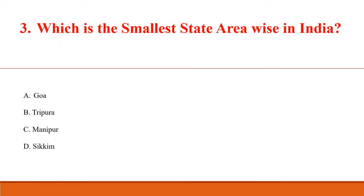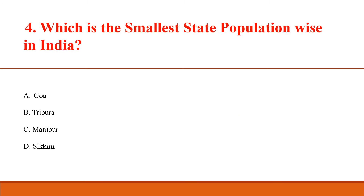Which is the smallest state area wise in India? Answer A: Goa, total area 3,702 km². Which is the smallest state population wise in India? Answer D: Sikkim, total population around 6.6 lakh.